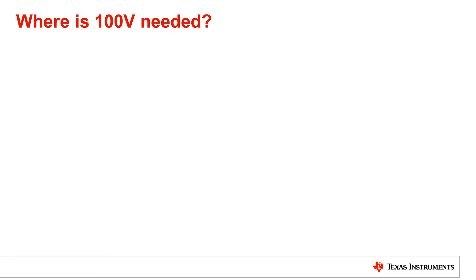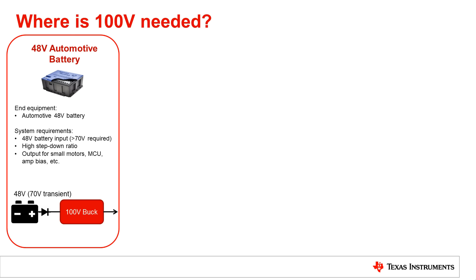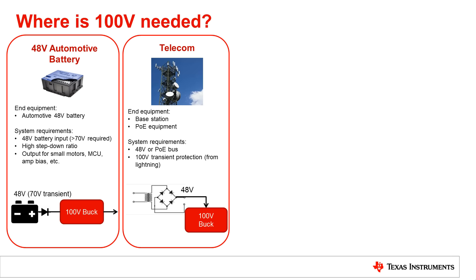Let's take a look at where 100 volts could be needed. The first space is the 48 volt automotive battery space, where normally the input voltage is 48 volts, but a 70 volt transient is required for the IC that's off the battery. In telecom, there is 100 volt transient protection required to protect from lightning strikes that may strike the base station.